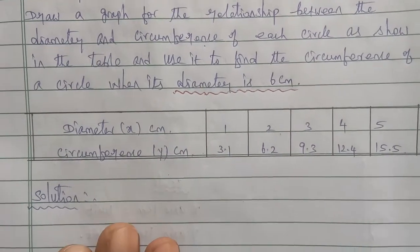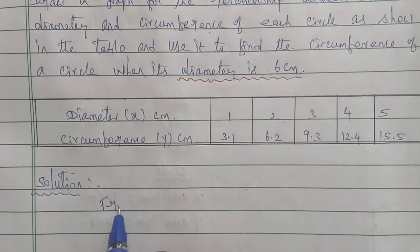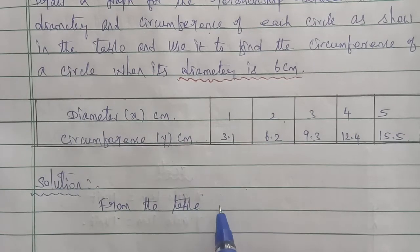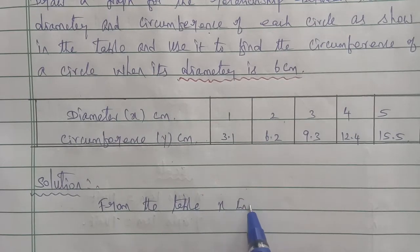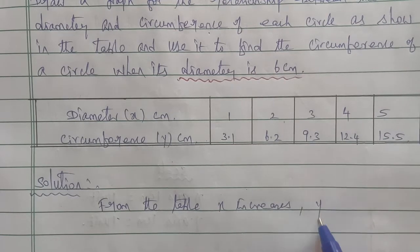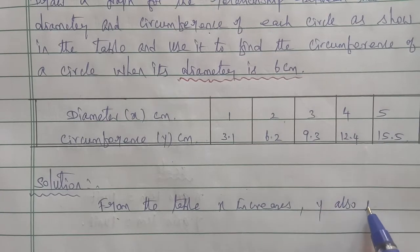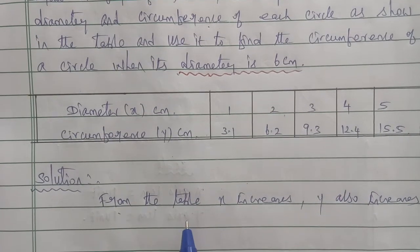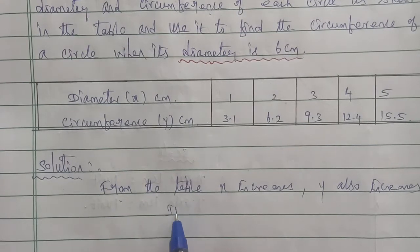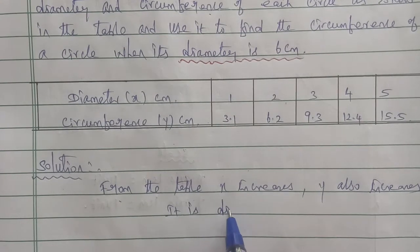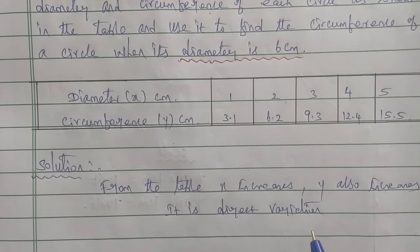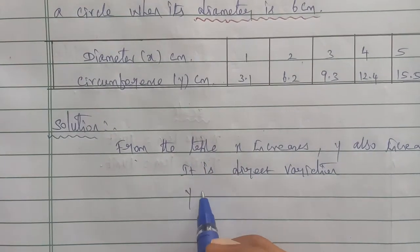So the solution: from the table, x increases and y also increases, so the given relationship is a direct variation. Direct variation has the graph equation y is equal to kx.